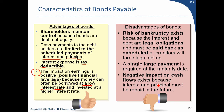Disadvantages of bonds: because interest and the principal are legal obligations, they must be paid back as scheduled or creditors can force legal action. A single large payment is required at the maturity date. There's a negative impact on cash flow. From an investor's perspective, the investor gives e-phone money, receives an interest payment every year, and when the bond matures in 10 years, e-phone owes the entire principal.